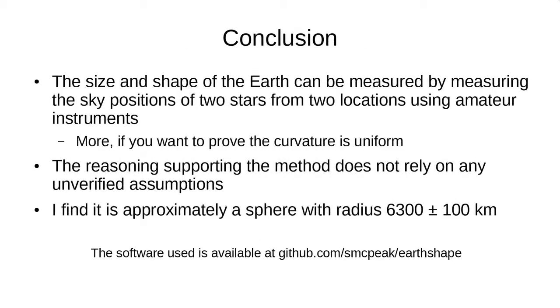In conclusion, the size and shape of the Earth can be measured using amateur instruments by simply measuring two stars at two locations. Of course, if you want to prove that the curvature is uniform, that is, that the overall shape is a sphere, you have to repeat this procedure at multiple locations. The reasoning is entirely self-contained, there are no unverified assumptions, and I find that it is, in fact, approximately a sphere with radius approximately 6300 kilometers. And the software that I used is available at the URL shown.